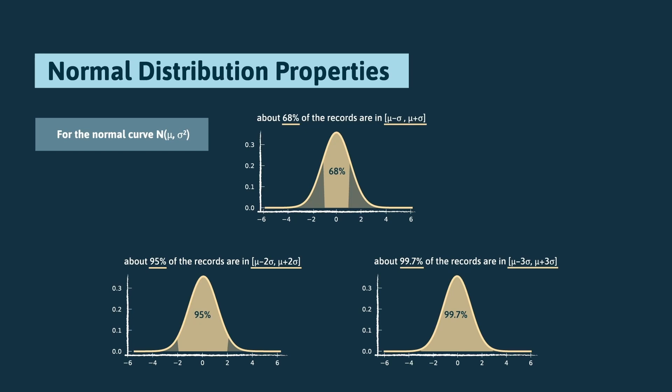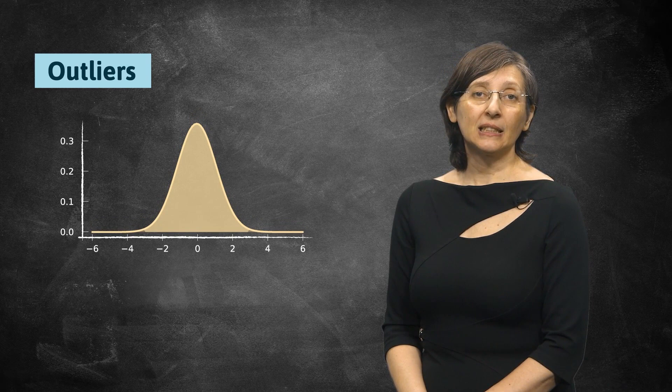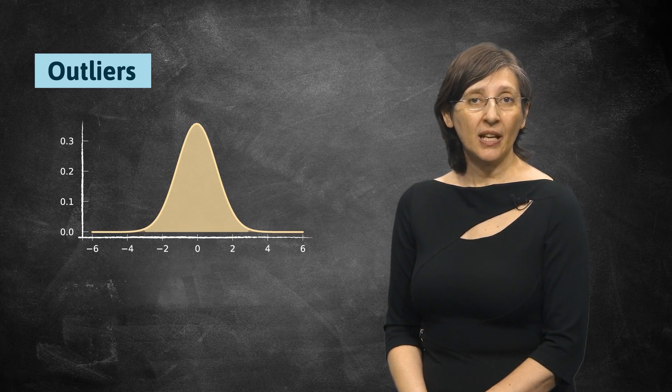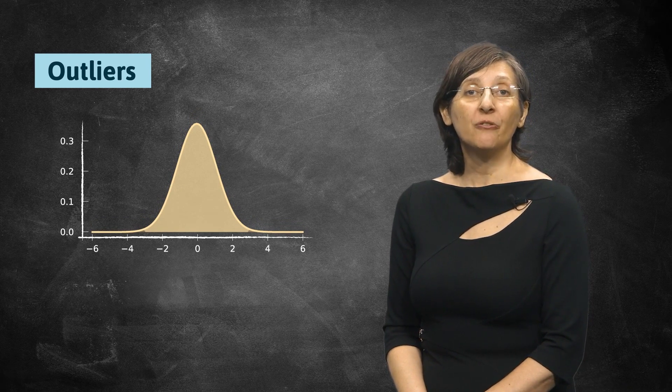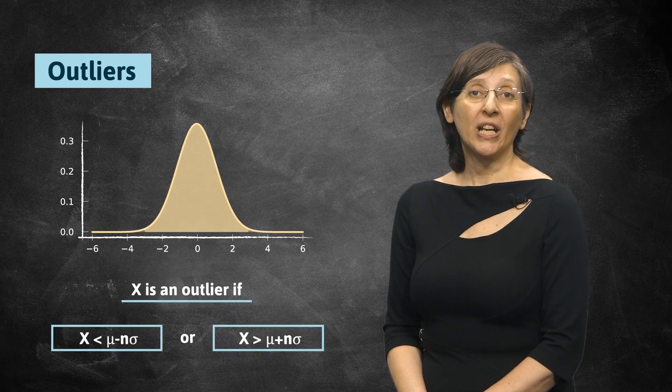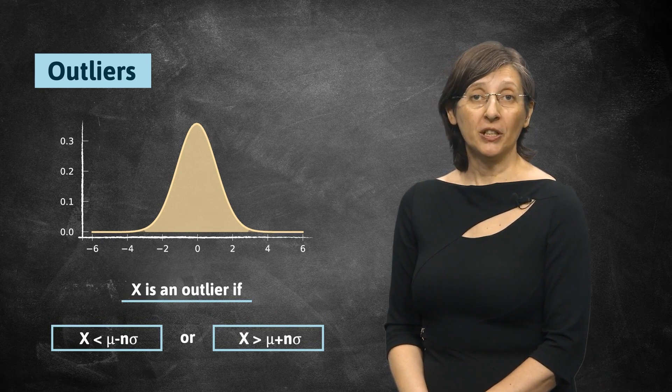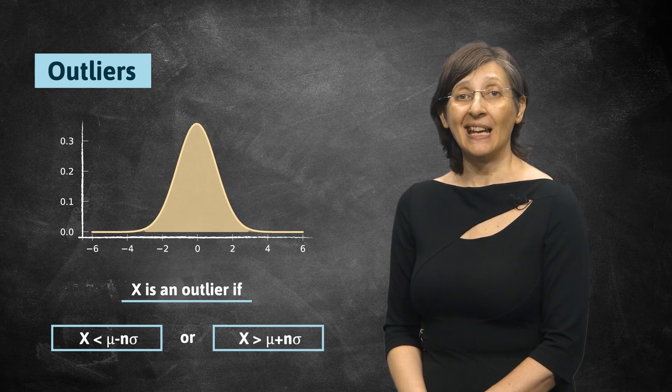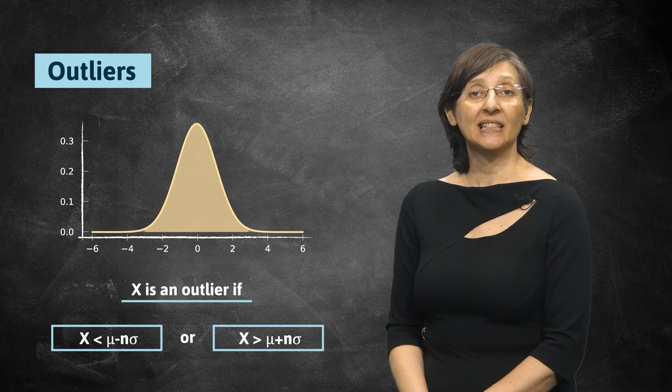Given these properties, it is easy to see that we can just use them to present a statistical definition for outliers. So, an outlier is an unexpected value, very uncommon in that it is too large or too small when compared with the variable's mean. So, we can say that an outlier is any value lower than the mean minus n standard deviations or higher than the mean plus n standard deviations.